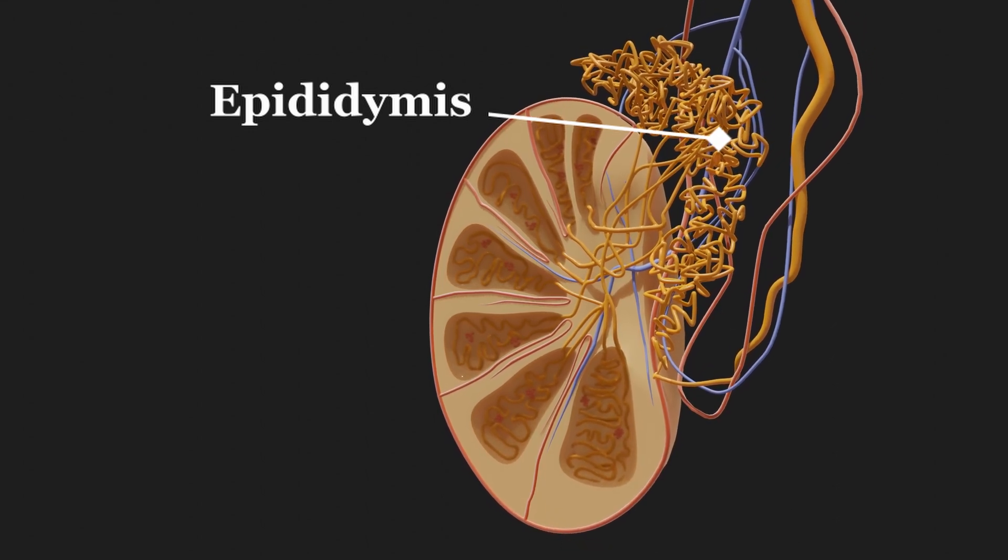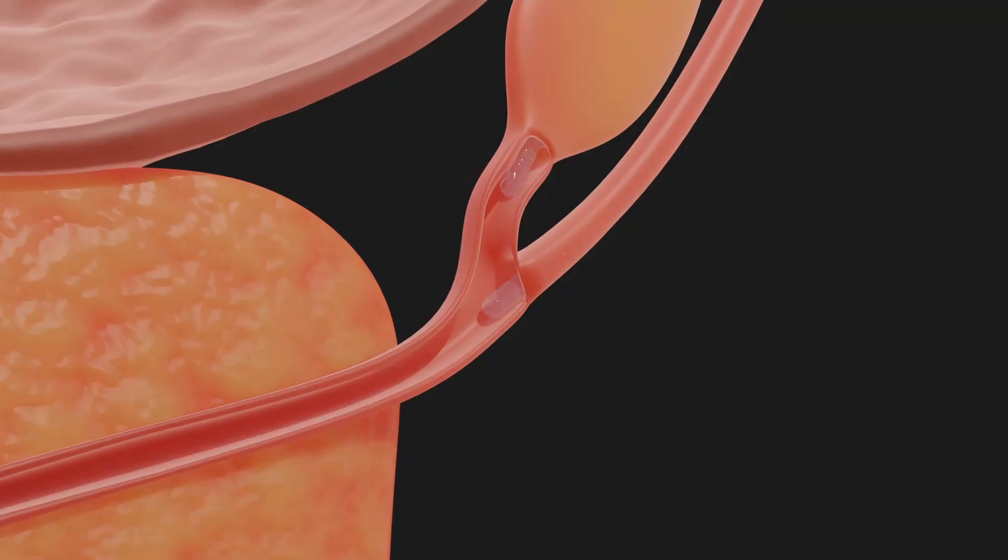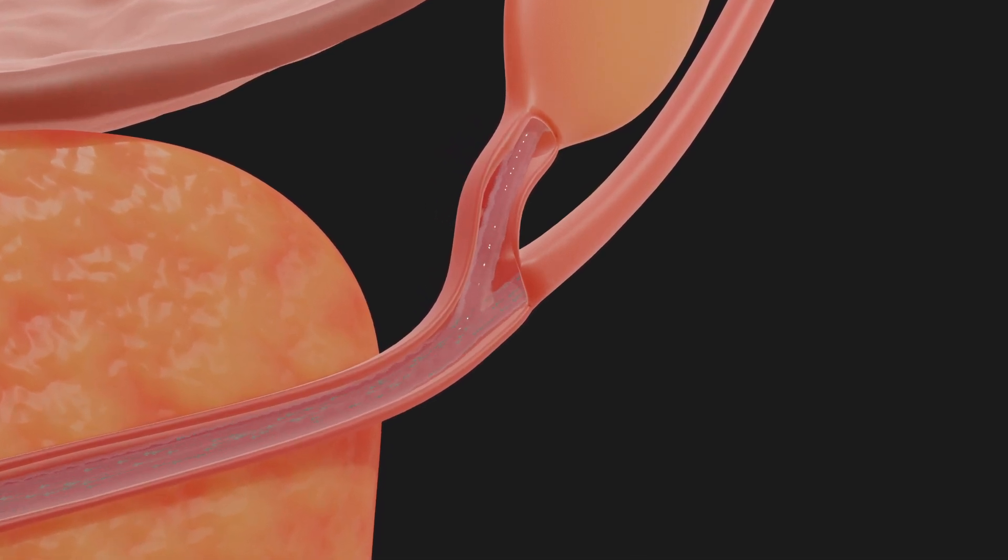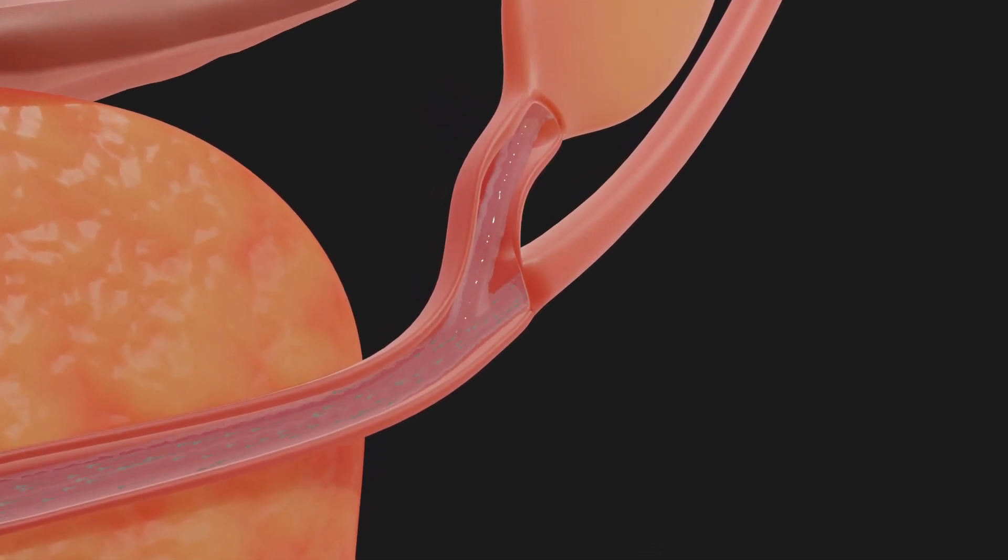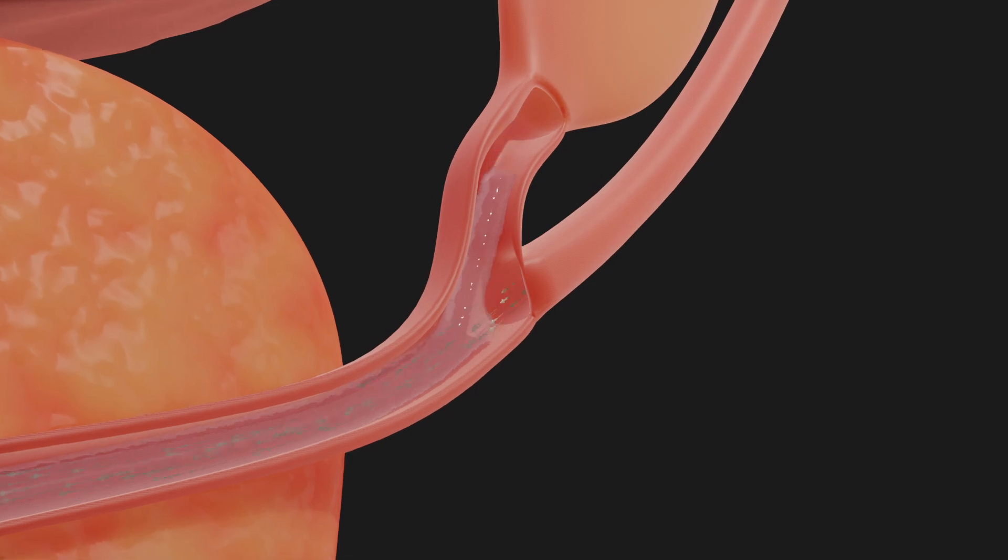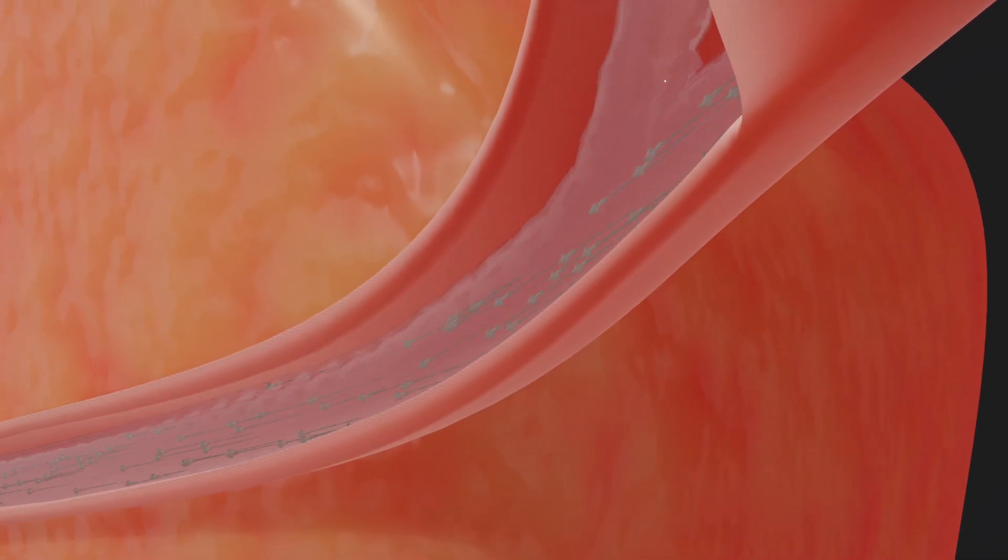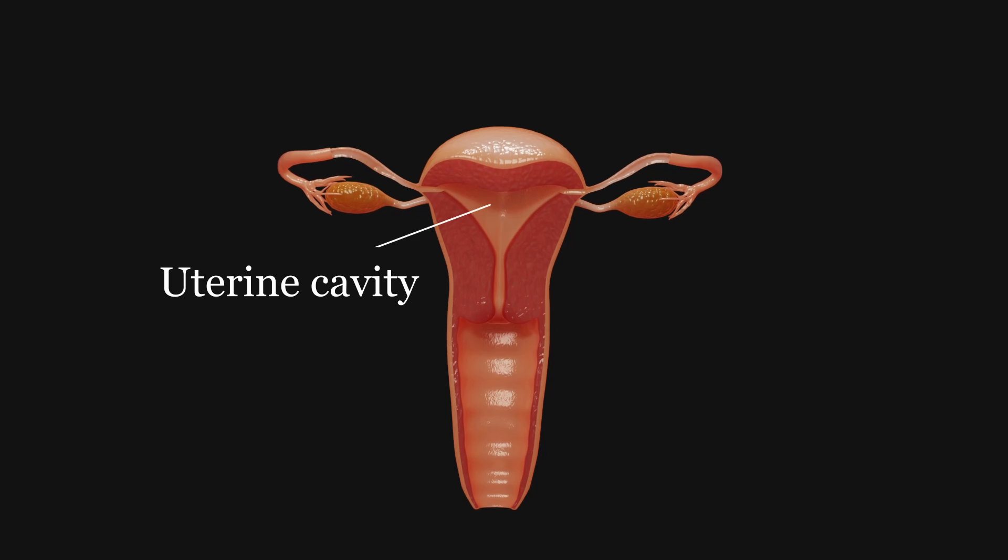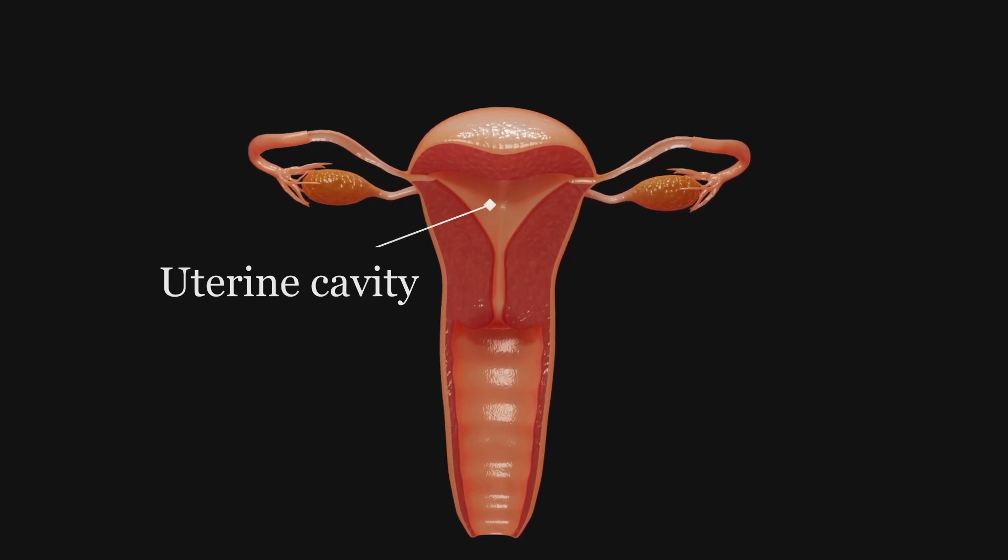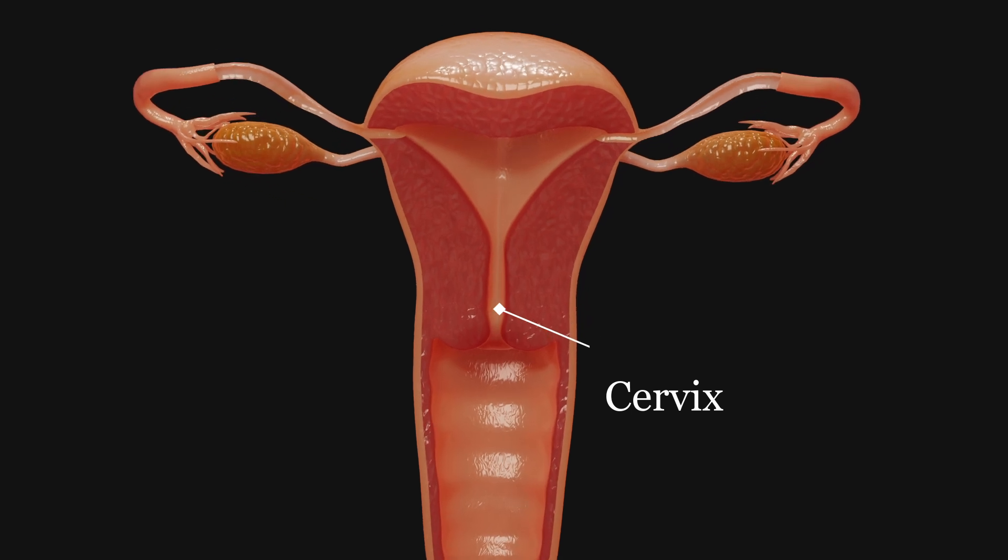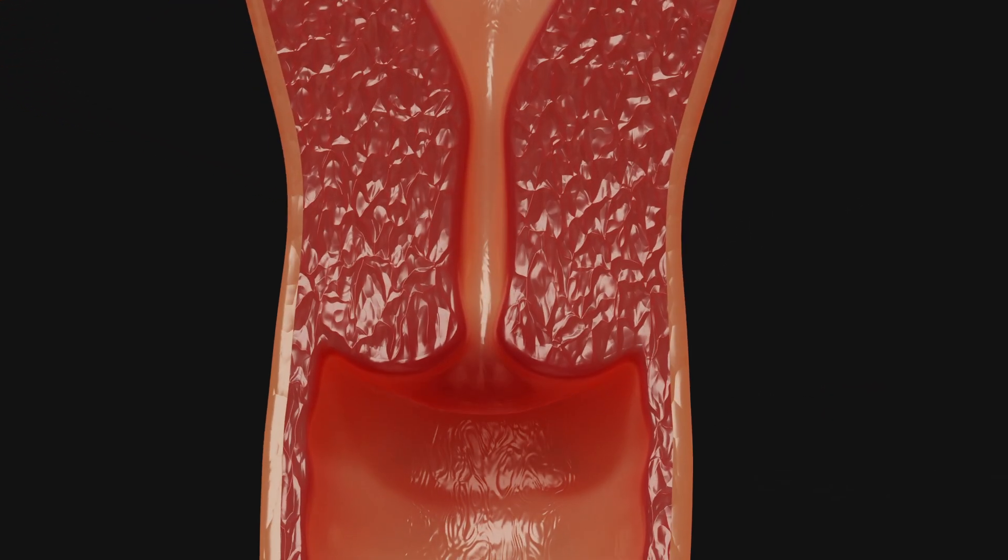With each ejaculation, millions of these germ cells, along with various sexual secretions, are expelled. For fertilization to be successful, these little swimmers must overcome several hurdles. First, they need to reach the uterine cavity. The cervix, which usually acts as an important barrier against pathogens, is slightly open on the fertile days, allowing the sperm to move forward.